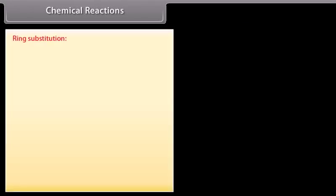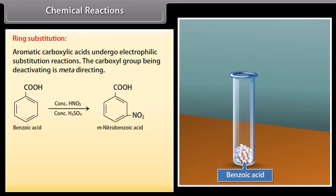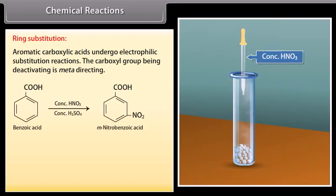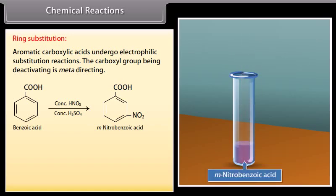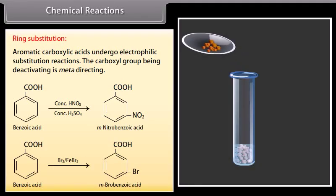Ring substitution: aromatic carboxylic acids undergo electrophilic substitution reactions. The carboxyl group, being deactivating, is meta-directing. On adding concentrated nitric and sulfuric acid to benzoic acid, it is converted into meta-nitrobenzoic acid. On adding bromine and ferric bromide to benzoic acid, it is converted into meta-bromobenzoic acid.